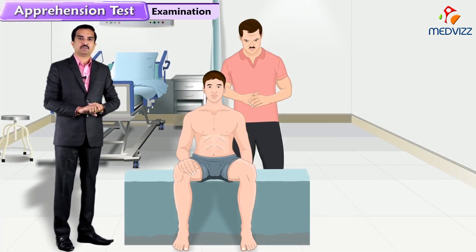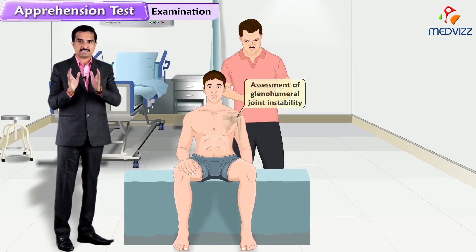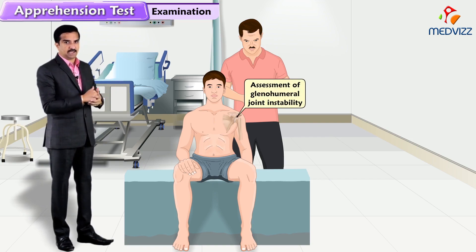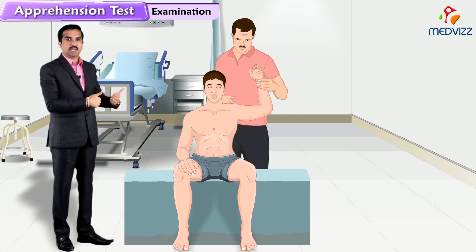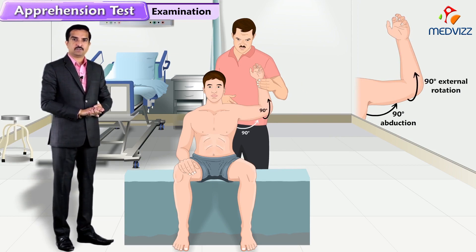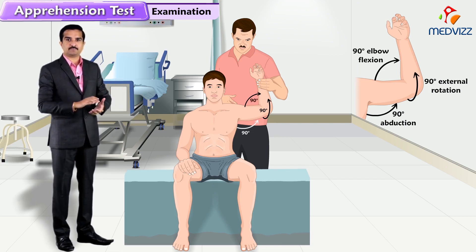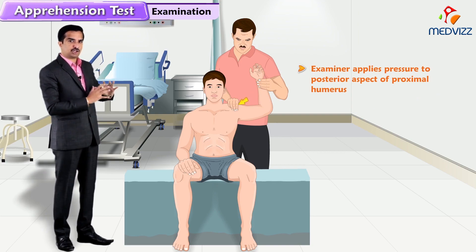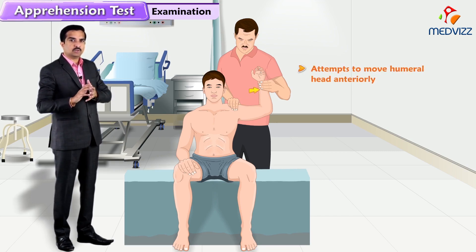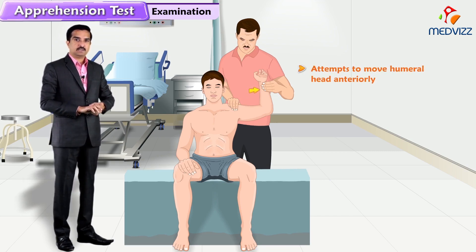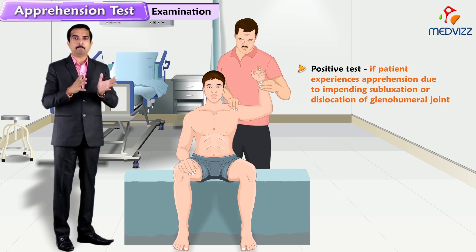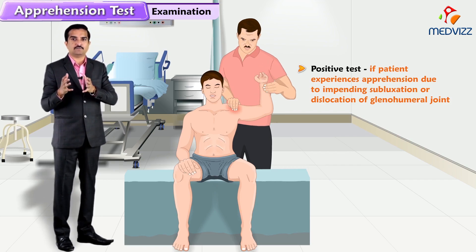What is this test all about? This apprehension test is an assessment of glenohumeral joint instability. With the patient sitting or lying supine, the shoulder is placed into 90 degrees of abduction, 90 degrees of external rotation, and 90 degrees of elbow flexion. The examiner applies pressure on the posterior aspect of the proximal humerus and attempts to move the humeral head anteriorly. The test is considered positive if the patient experiences apprehension due to impending subluxation or dislocation of the glenohumeral joint.